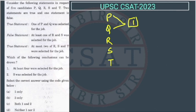At most two of R, S, T were selected for the job. So, out of these three, we can select either 0, 1, or 2 because this is saying at most two will get selected.